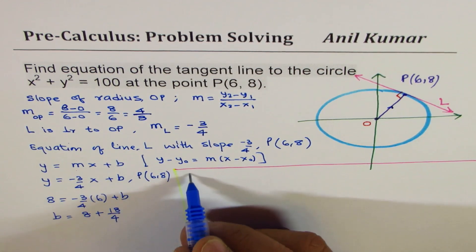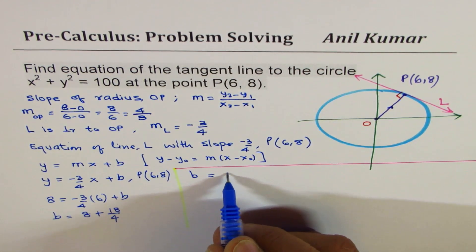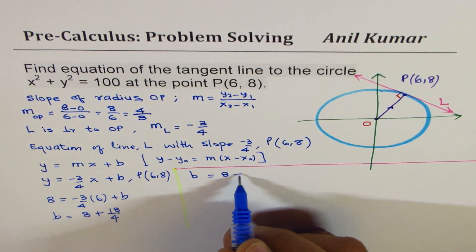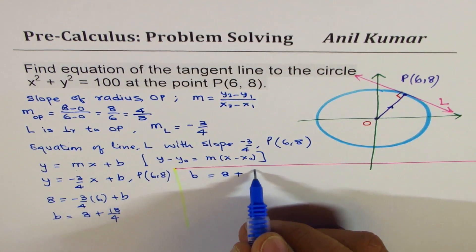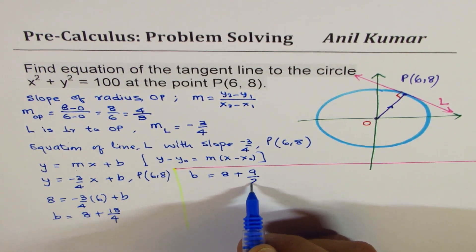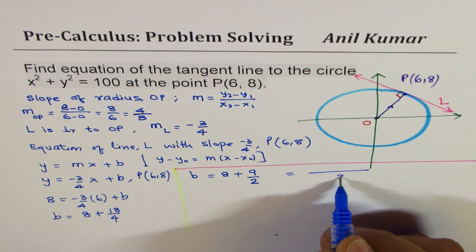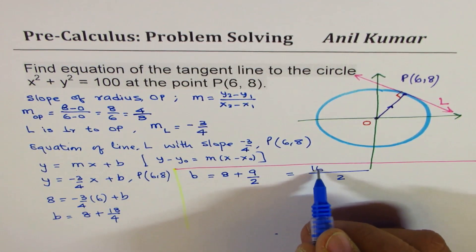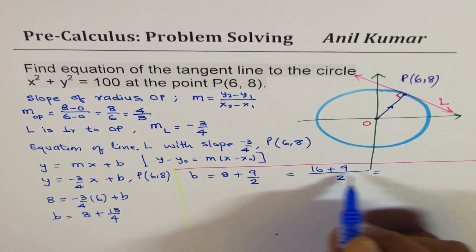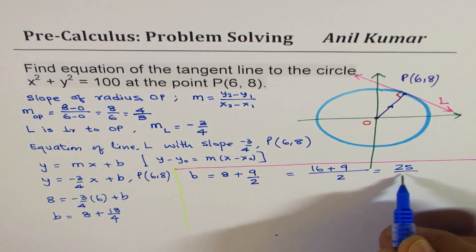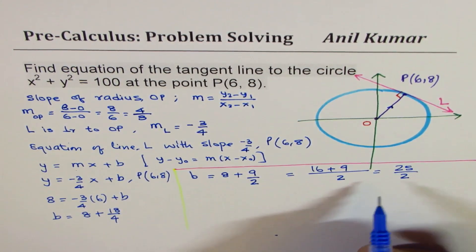So what we have here is b equals 8 plus, dividing both by 2 gives us 9 over 2, which is taking 2 as common denominator, 8 times 2, 16 plus 9, which is 25 over 2. So once we know what b is...